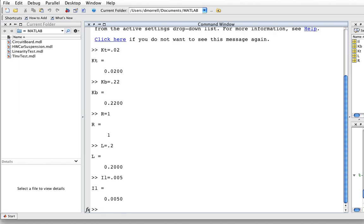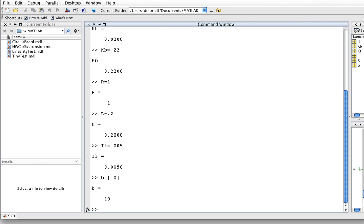Okay. Now, our numerator B is just going to be a vector that has a single value 10 because the numerator is just the single number 10.